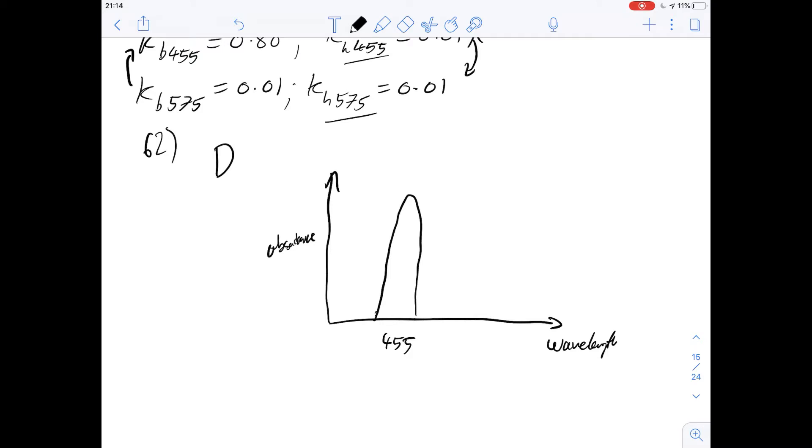Say we've got an absorbance peak here at 455 nanometers wavelength, and we've got another one here at 575. These absorbance peaks will be due to both bilirubin and hemoglobin. And it would be difficult to measure the concentration of bilirubin if we weren't already able to determine to what extent the absorption values we were getting were caused by hemoglobin.